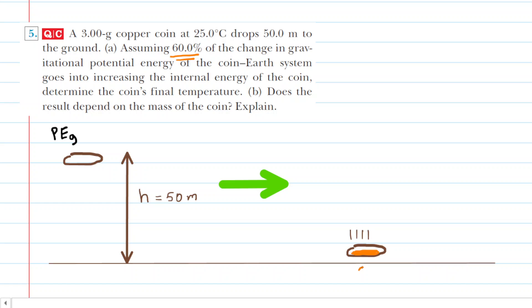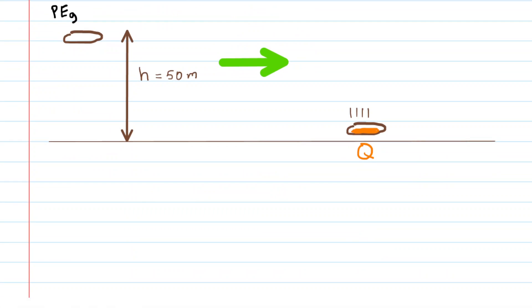Conservation of energy allows us to set these equal to each other, but remember that only 60% or 0.60 of the gravitational potential energy converts into thermal energy.